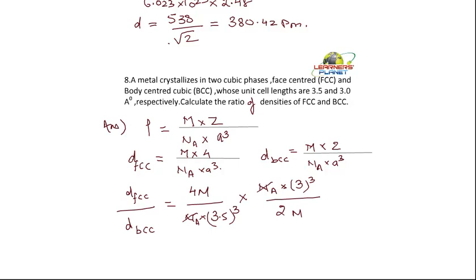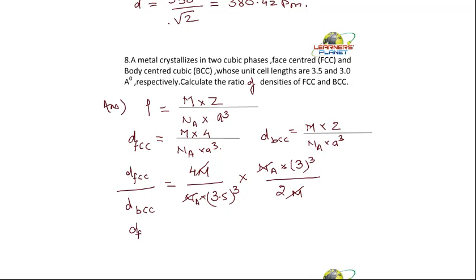What are the things we will be getting, students? Density FCC by density BCC is equal to 2 into 9 by, what is 3.5 cube? It should not be 9, 3 cube should be 27. So it should be 2 into 27 divided by 3.5, sorry, divided by 42.87.